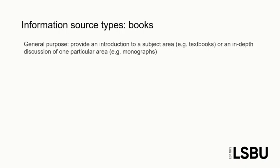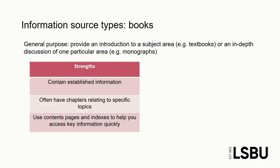Let's start with academic books. Both print and ebooks usually provide either a general introduction to a subject area or an in-depth discussion of one particular topic. For information to be printed in a book, it is usually considered to be established or widely agreed as accurate, which makes them very useful for understanding the key points in a topic area. Books are often broken into different chapters that might be more or less relevant to your research area, and many will also have an index that allows you to find specific words, phrases or topics quickly.